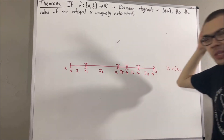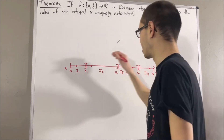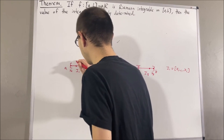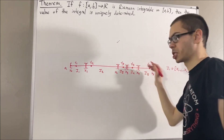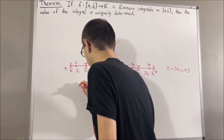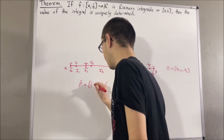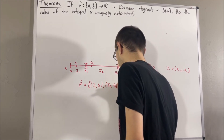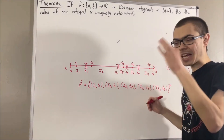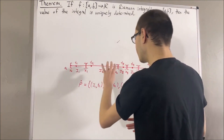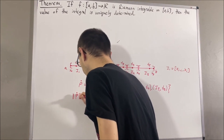A tagged partition is when we select a point from each of the subintervals. The points that we select are called tags, and we might label the tags t1, t2, t3, and so on. We typically denote a tagged partition by a letter with a dot on top, and in the collection we have ordered pairs where the first coordinate is the subinterval and the second coordinate is the tag in that subinterval. The norm of a partition is the length of the longest subinterval, denoted with vertical bars.